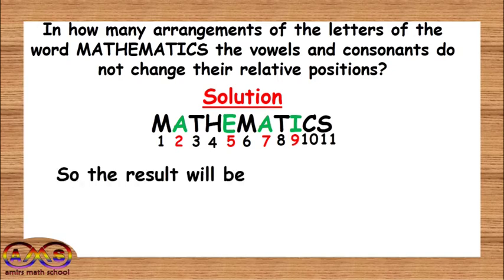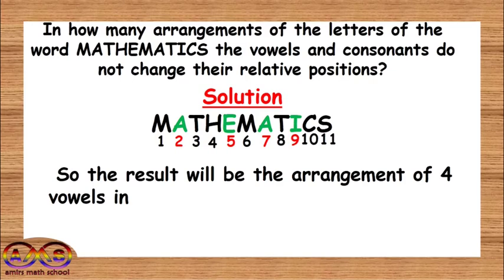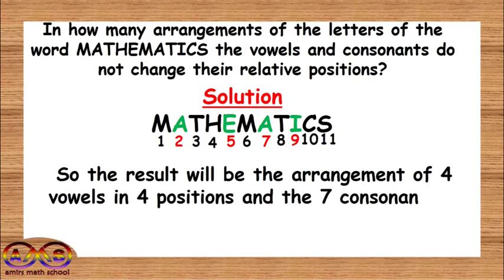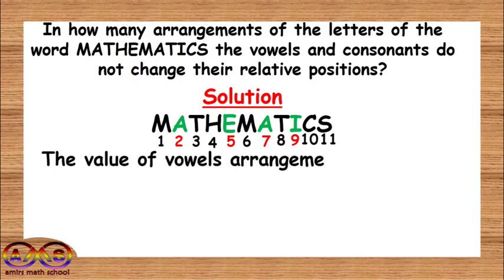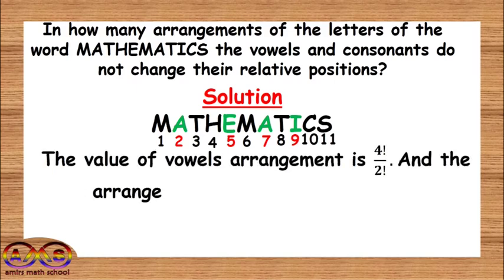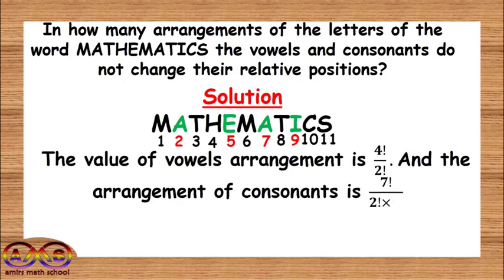The result will be the multiplication of the arrangement of 4 vowels in 4 positions and the 7 consonants in 7 positions. The value of the vowels arrangement is 4 factorial divided by 2 factorial, and the arrangement of the consonants is 7 factorial divided by 2 factorial into 2 factorial.